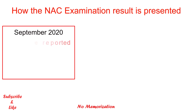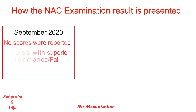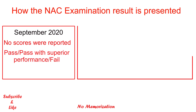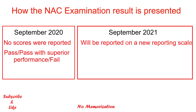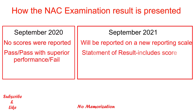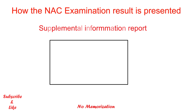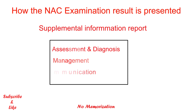For the September 2020 NAC exam session, no scores or sub-scores were reported — it was only pass, pass with superior performance, or fail. But for the upcoming September 2021 session, scores will be reported on a new reporting scale yet to be published. Each candidate will receive two score reports: the Statement of Results, which includes your final result and total score, and the Supplemental Information Report, presented graphically to indicate your relative strengths and weaknesses in three broad domains — assessment and diagnosis, management, and communication skills.